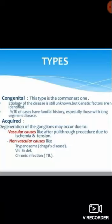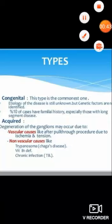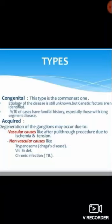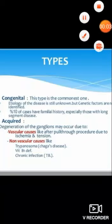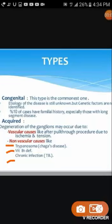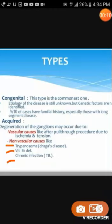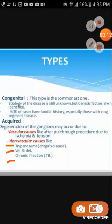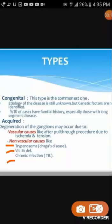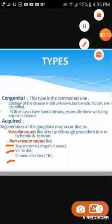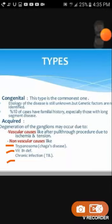For non-vascular causes: Trypanosoma infection, also known as Chagas disease, caused by the parasite Trypanosoma cruzi. Also, vitamin B1 deficiency and chronic infections like tuberculosis (TB) can also be causes of Hirschsprung's disease.